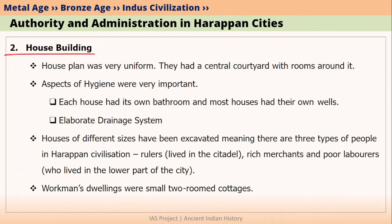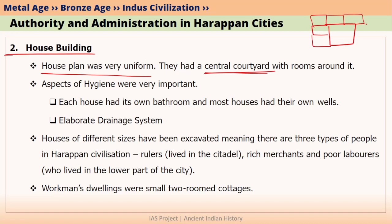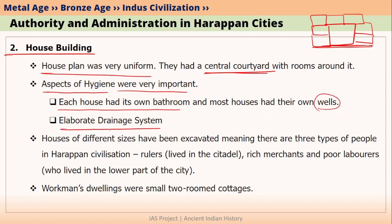The second element is house building. The house plan was very uniform — all houses had a central square courtyard with many rooms around it. This again means there was a body or government regulating house building. Moreover, Harappans considered hygiene very important: each house had its own bathroom and most had their own wells. All cities and smaller settlements also had elaborate drainage systems. This indicates there was an administration monitoring and maintaining them, because once you build a drainage system, you have to regularly maintain it — this job was done by some kind of government.